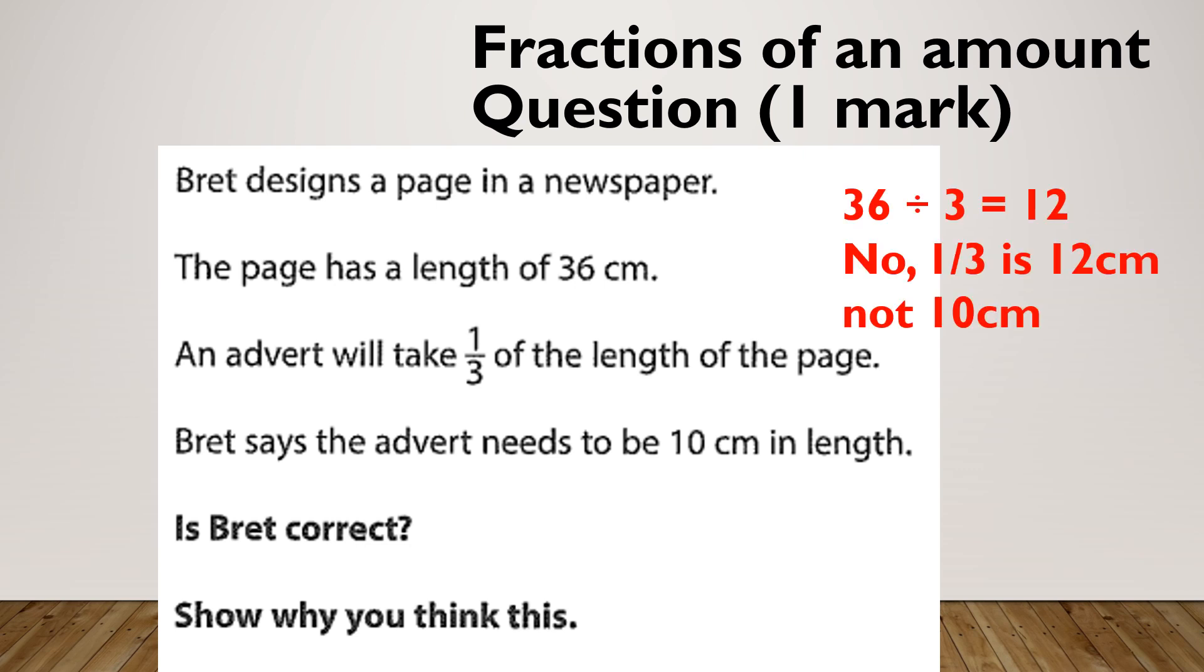Let's check it out. Hopefully 36 divided by three is 12. So you've got 36 divided by three is 12 and no. Now, don't forget at entry three, you will have a yes, no tick box as part of your options. But by the time we get to level one, we need to get into the habit of writing the words yes or no.